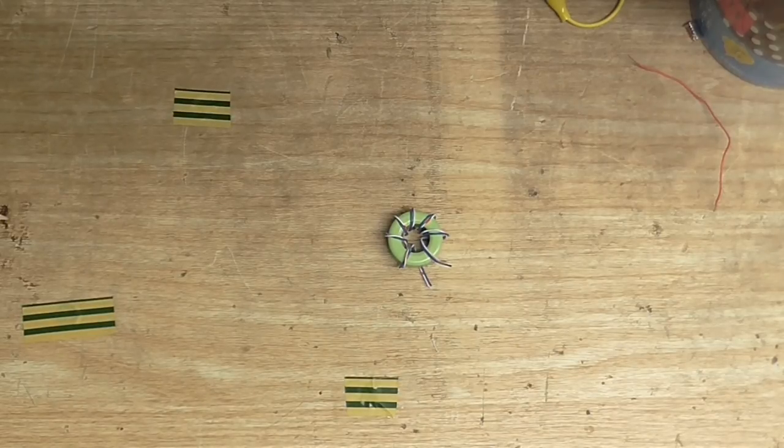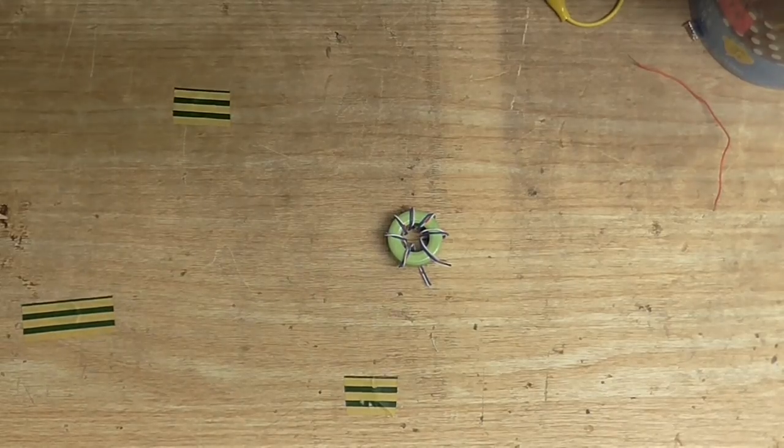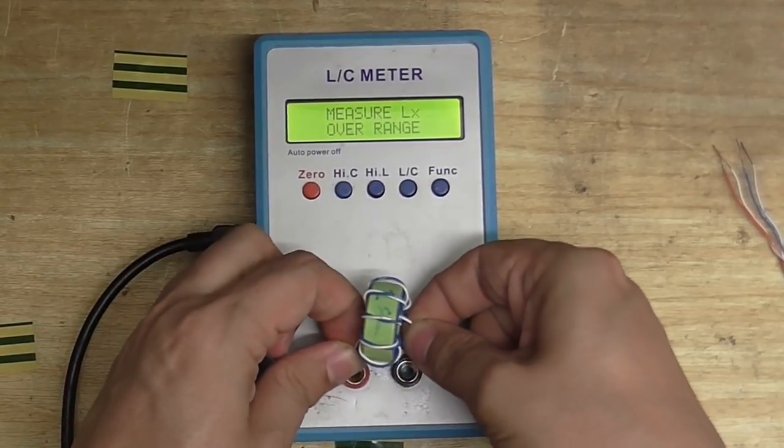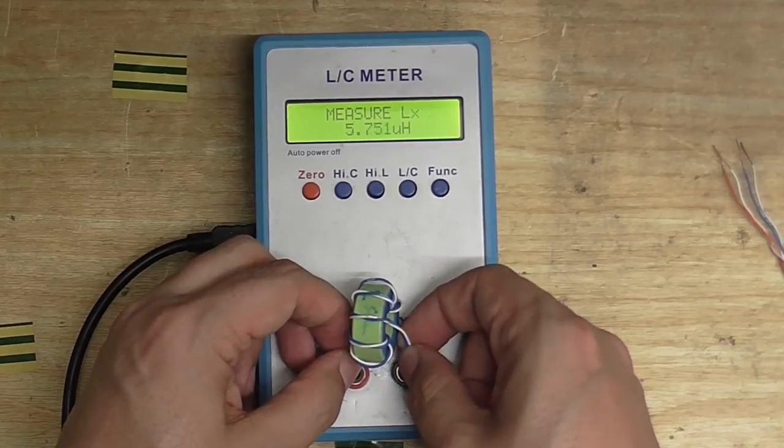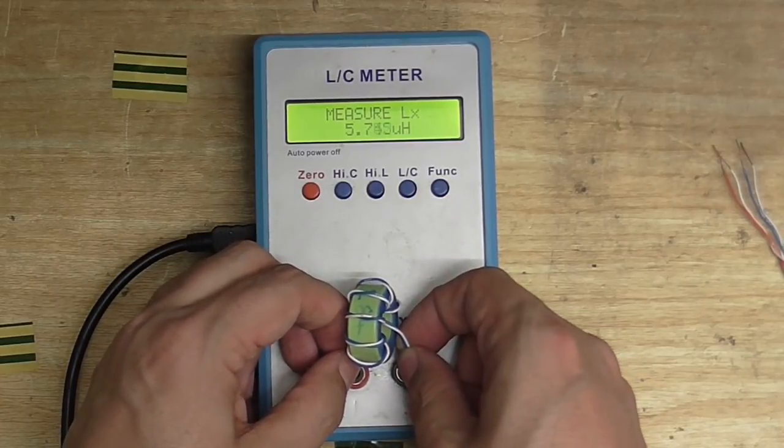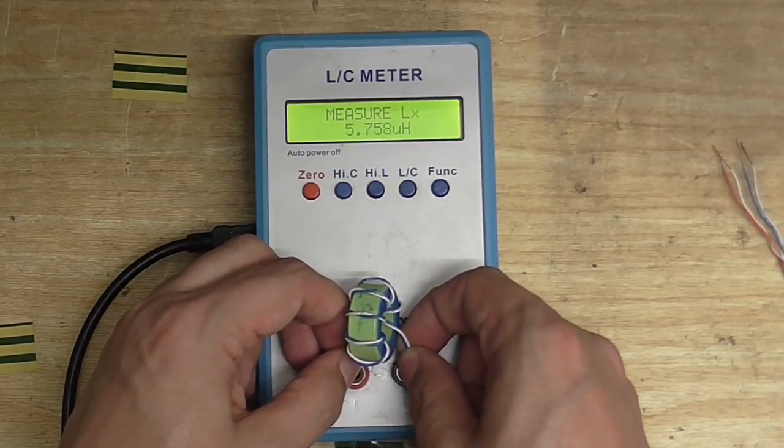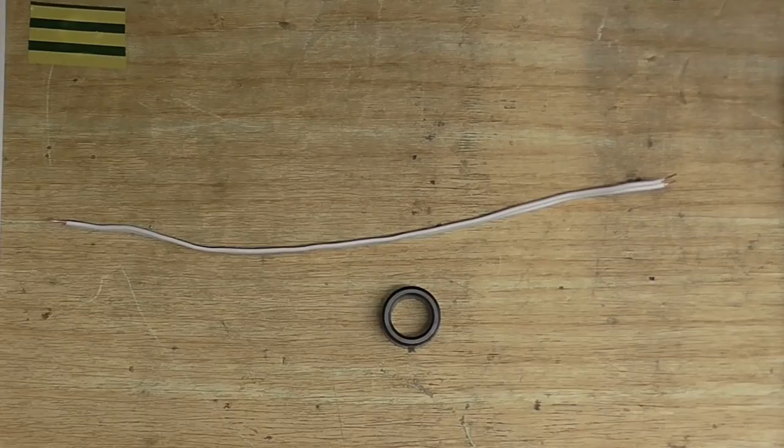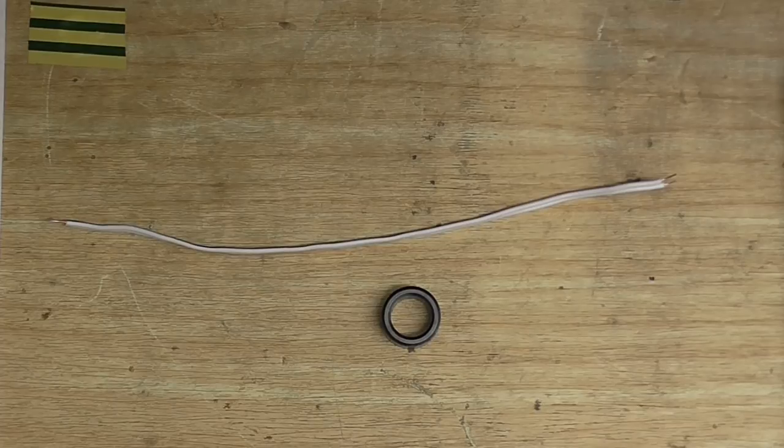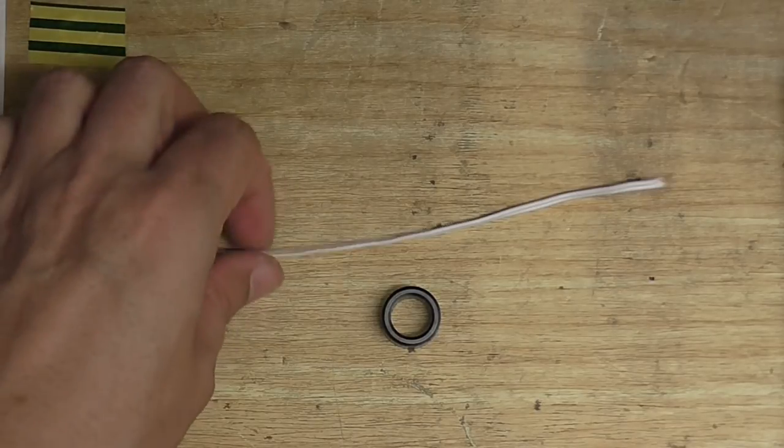So, let's get the inductance meter out and measure it. So here's our core we just wound. Let's see what this one comes to. As you can see it's about the same as it was when we wound it with the other style of wire. And of course there are other types of wire you can use to wind your cores with.